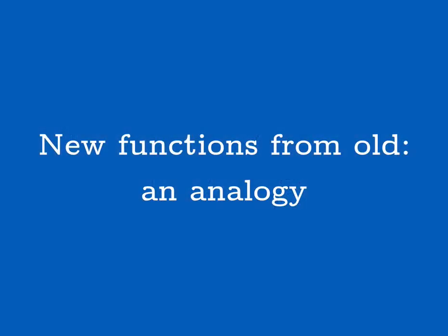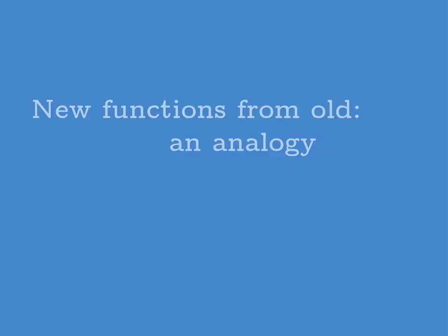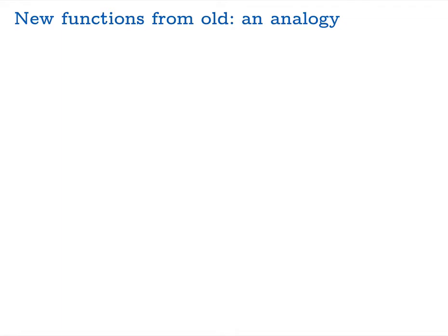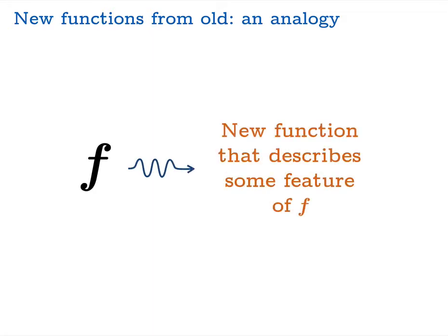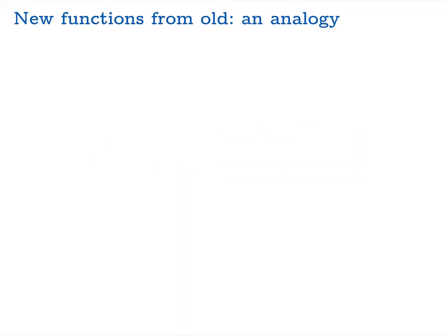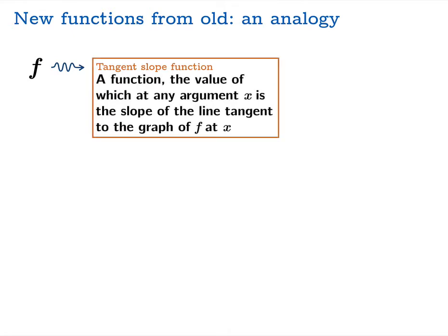Now on to our new definition. We're going to think about the general process of finding new functions from old, drawing an analogy with something you're quite familiar with already. Sometimes it's really important to take an old function and from it find a new function that describes some feature of the old function. You've already become quite familiar with one: the tangent slope function. Given a function f, you want to find a new function — the tangent slope function — whose value at any argument x is the slope of the line tangent to the graph of f at x.